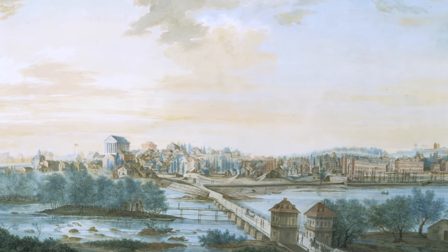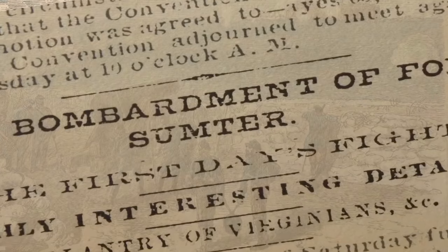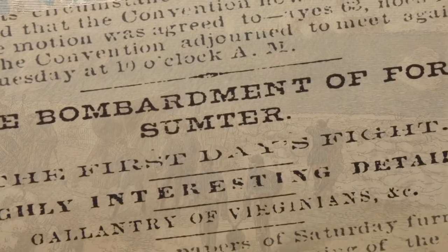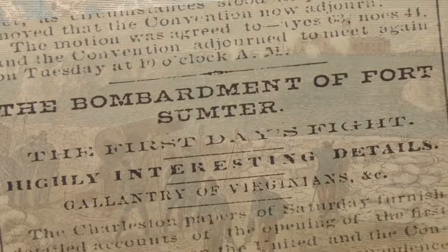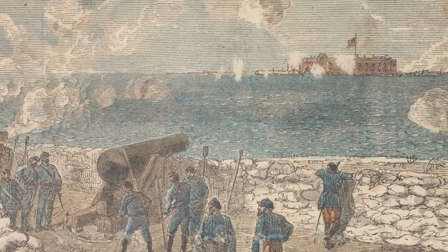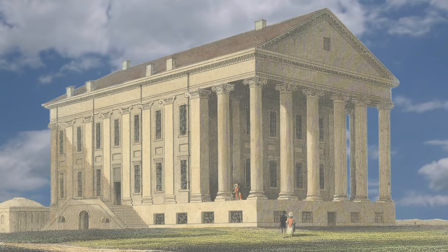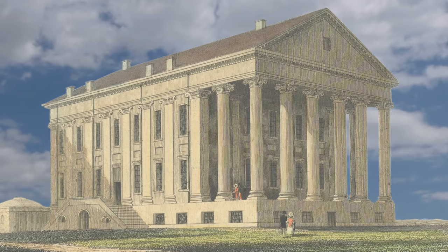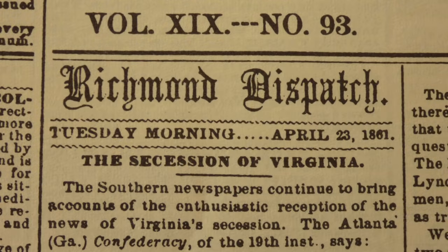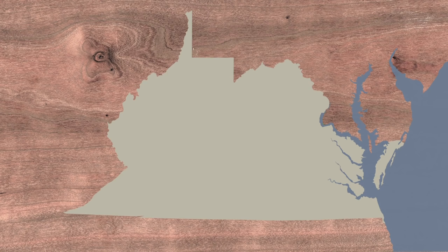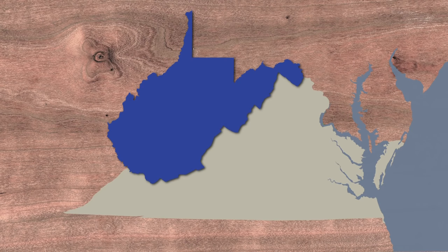At first, Virginia voted to remain in the Union. It wasn't until South Carolina attacked a Union fort off its coast called Fort Sumter that war actually began. Now Virginia was forced to decide which side it would fight with, and after voting a second time, it chose to join the Confederacy. Even after secession, 50 counties in western Virginia refused to leave the Union, and in 1863 became the state of West Virginia.